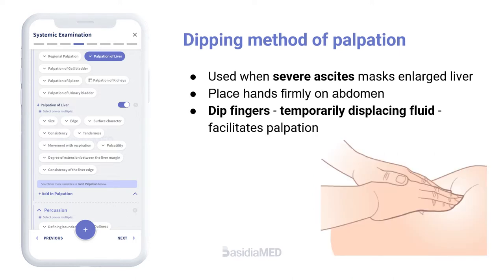The dipping method is used in severe ascites, which may mask an enlarged liver. Place your hands flat on the abdomen and dip your fingers into the abdomen with each palpation. This displaces the fluid temporarily to the side and facilitates palpation.